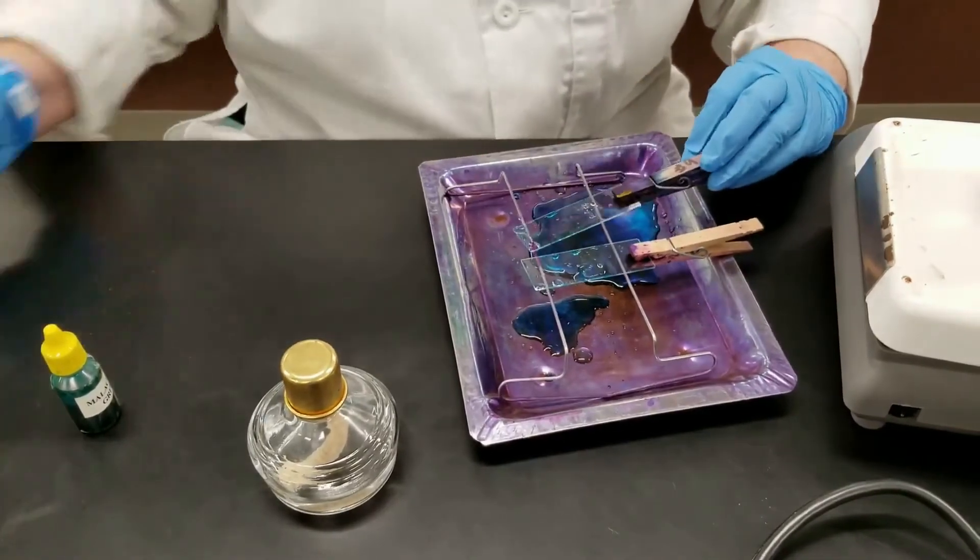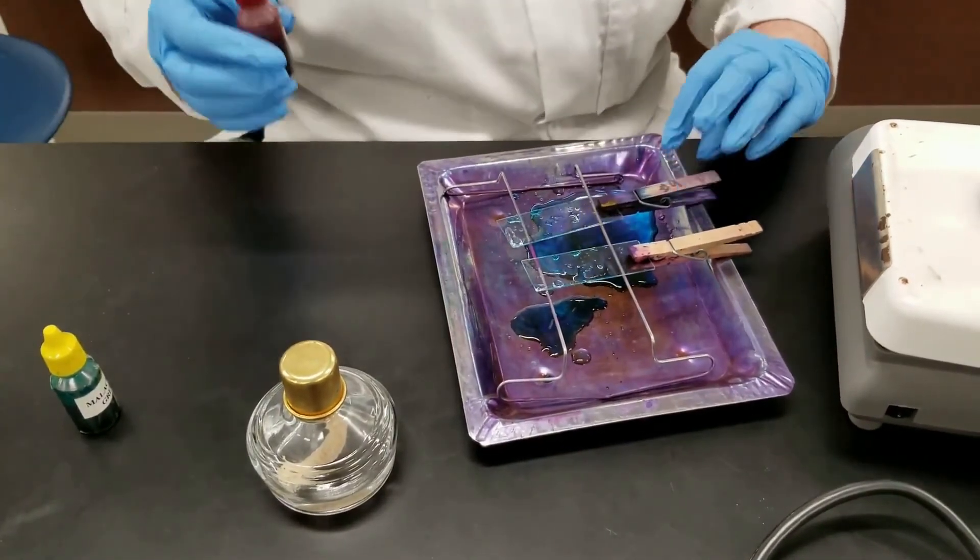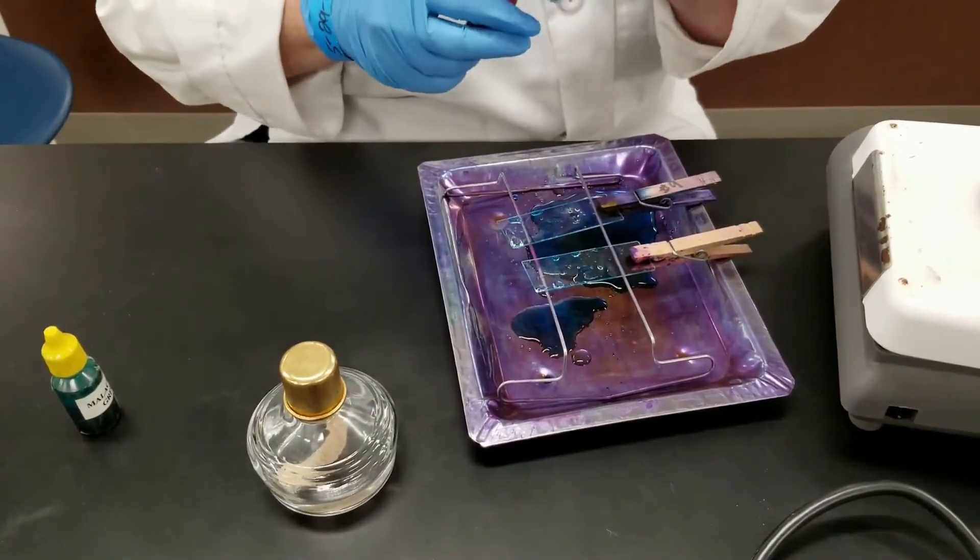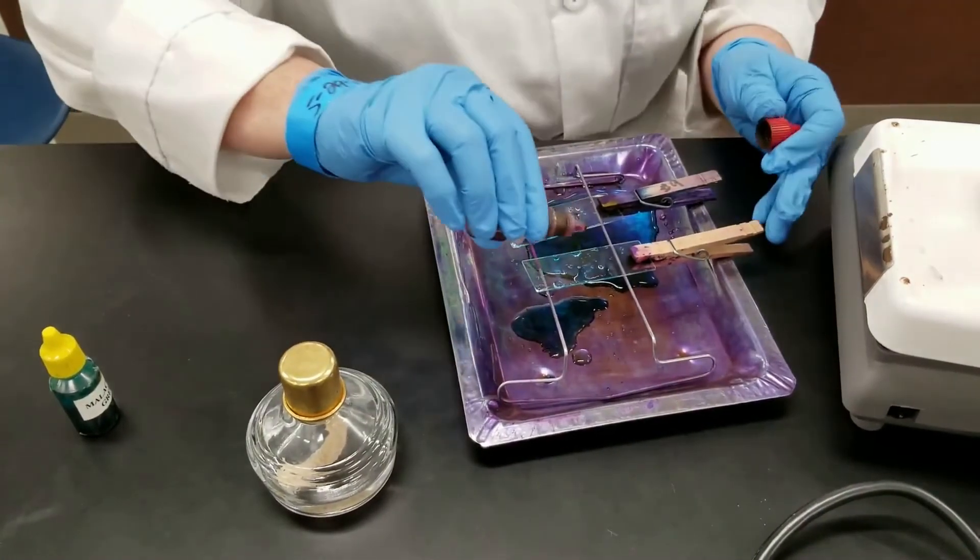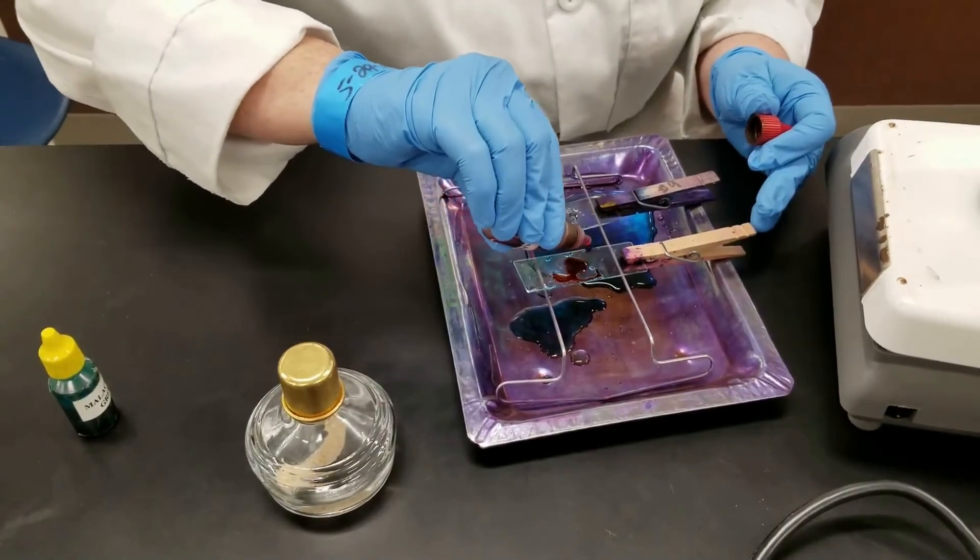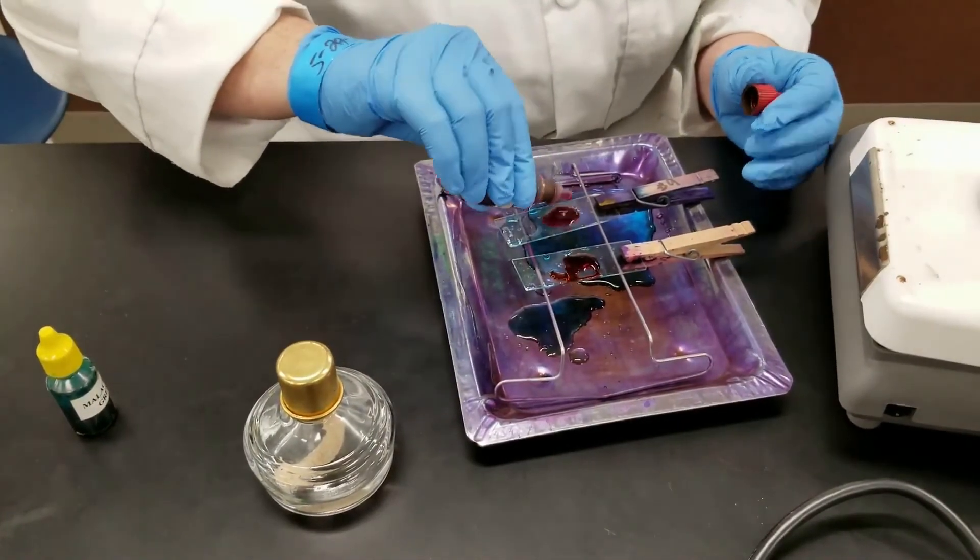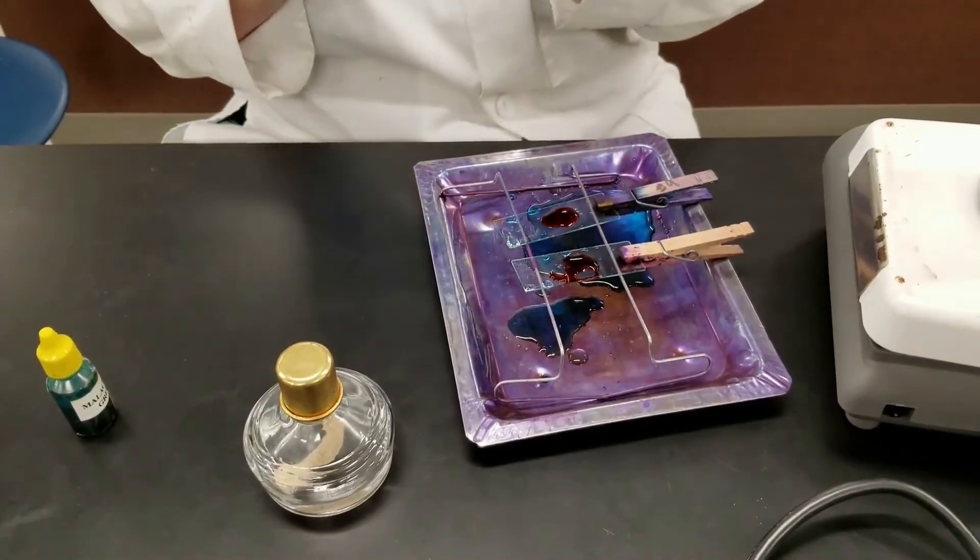Now we're going to add the counter stain, which is safranin red. We're going to put this on. It will stay on for one minute. Here comes the safranin red, and we'll let that sit now for one minute.